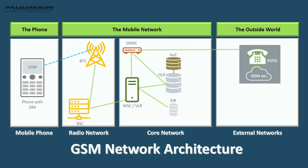The BSC then connects the phone to the MSC or the Mobile Switching Center, which is one of the most important entities within the GSM mobile core network. The MSC is linked to the outside networks via GMSC or Gateway MSC. The external networks include telephone networks such as the PSTN — Public Switched Telephone Network — and ISDN, which stands for Integrated Services Digital Network.